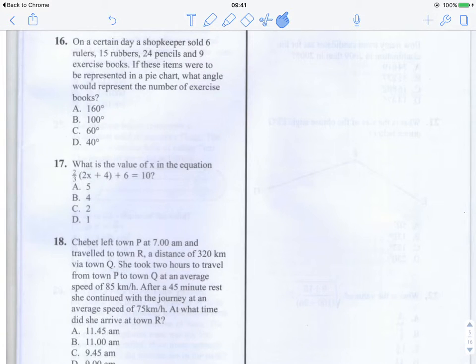This is question 16 of the 2013 KCPE maths paper. On a certain day a shopkeeper sold six rulers, 15 rubbers, 24 pencils and nine exercise books. If these items were to be represented in a pie chart, what angle would represent the number of exercise books?